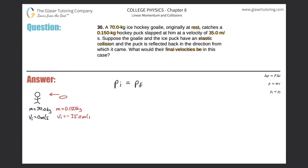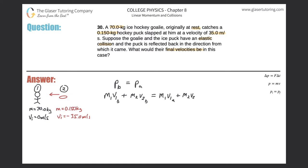So here I have a nice little picture. I'll call the goalie object one and the puck object two. So the momentum before the collision equals the momentum after. That's M1 times the velocity of the goalie before the collision, added to M2 times the velocity of the puck before the collision, and that equals M1 times the velocity of the goalie after the collision, plus M2 times the velocity of the puck after the collision.